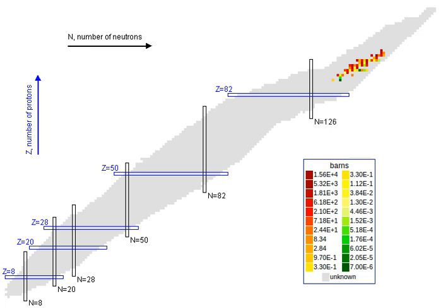N equals number of neutrons and Z equals number of protons. Fissile is distinct from fissionable.